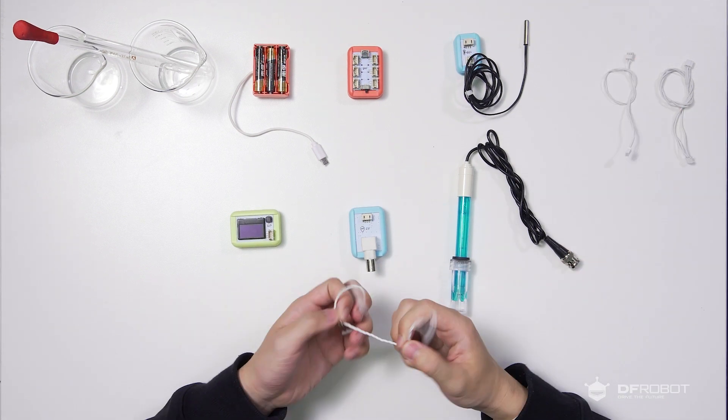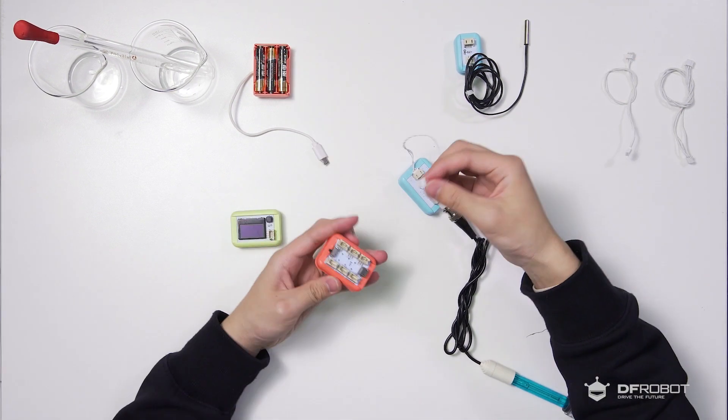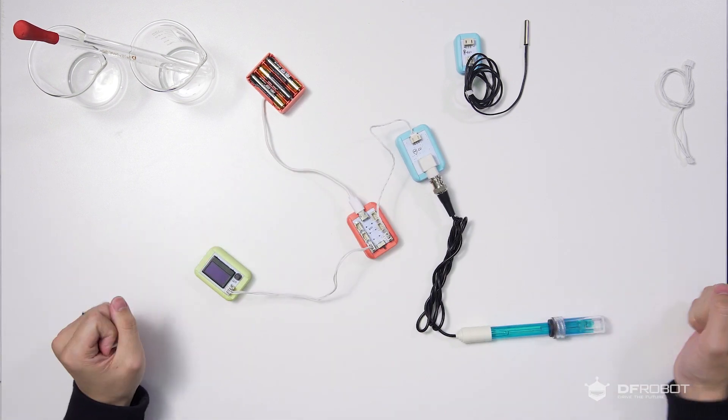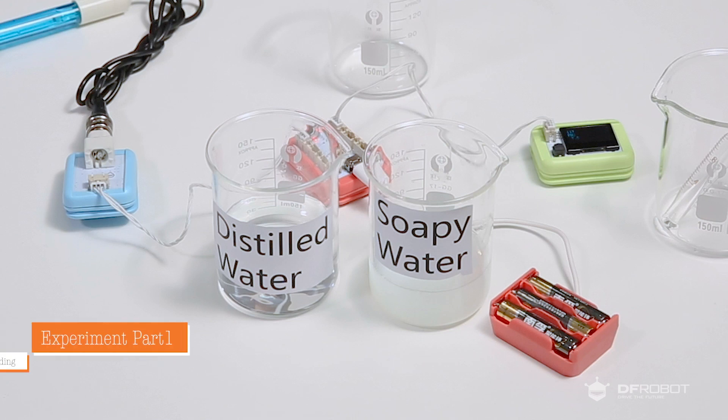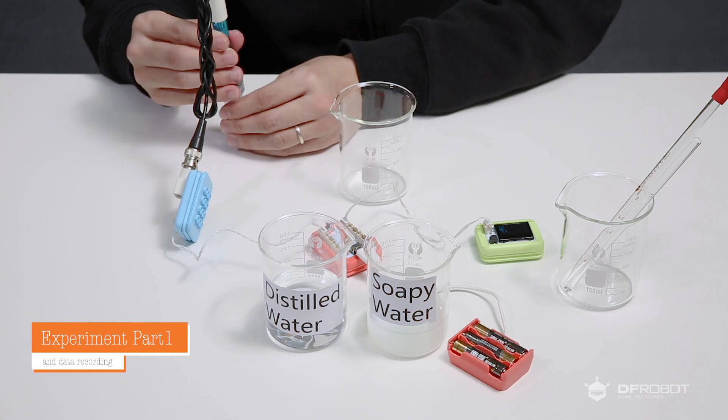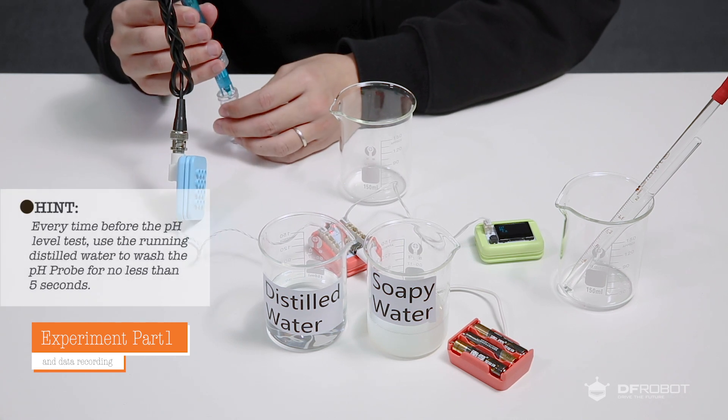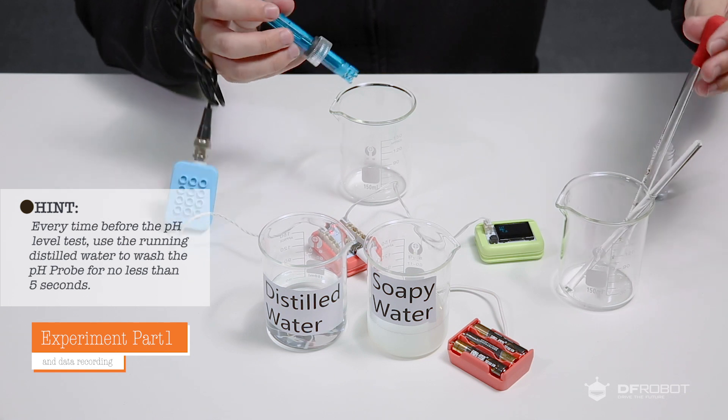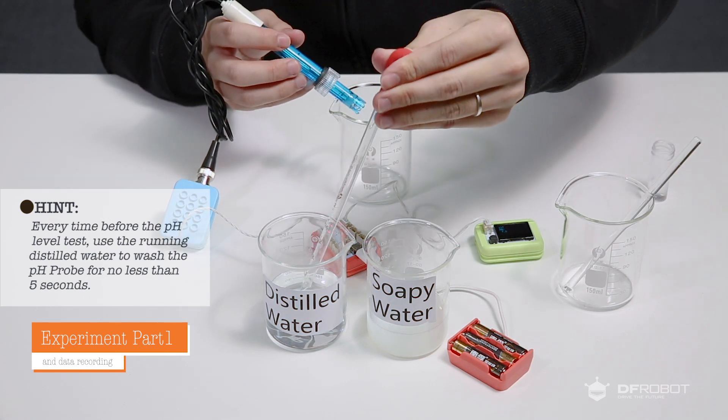Now let's connect these tools. Here's the soapy water and distilled water we prepared for this experiment. Now I'll show you how to do it. Remember every time before we do the pH level test use the running distilled water to wash the pH probe for no less than five seconds.